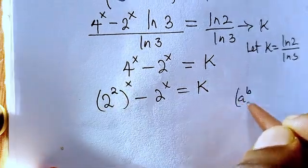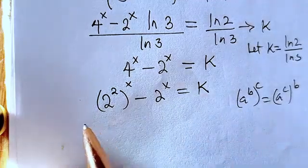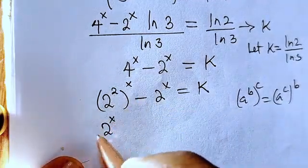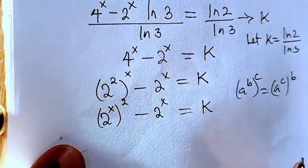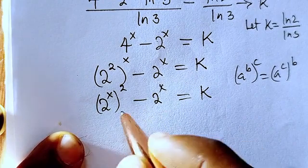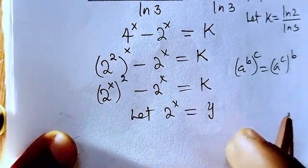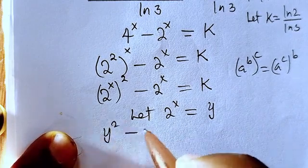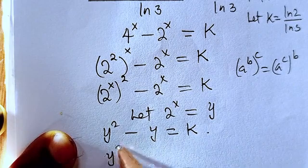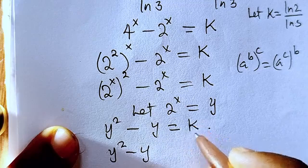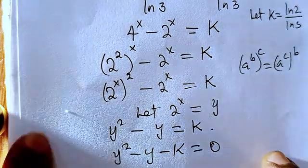Using the power rule, 2^(2x) becomes (2^x)^2. So we have (2^x)^2 minus 2^x equals k. We let y = 2^x, which gives us y² minus y equals k, and rearranging: y² minus y minus k equals 0.